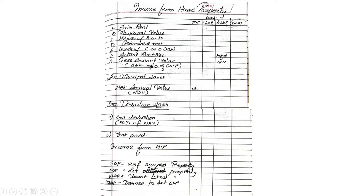From NAV comes less deduction under Section 24. Two types of deduction: one is standard deduction, that will be 30% of NAV, and the other one is interest paid on construction of the house property. When you subtract the deduction from NAV, you get income from house property. Now the rule is that for SOP, that is self-occupied, all the values up to NAV and standard deduction will be nil. Only interest paid can be available.